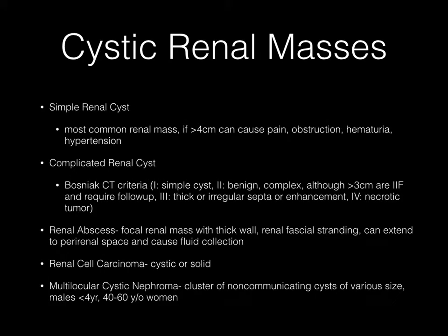Regarding cystic renal masses, a simple renal cyst is the most common renal mass, and if large enough, can cause pain, obstruction, hematuria, and hypertension. Complicated renal cysts fall under the Bosniak CT criteria, categories one through four: one being a simple cyst, two being a complex but still benign-appearing cyst — although if greater than 3 cm, they are termed 2F and require follow-up. Categories three and four are more concerning and typically involve elements that enhance with contrast.